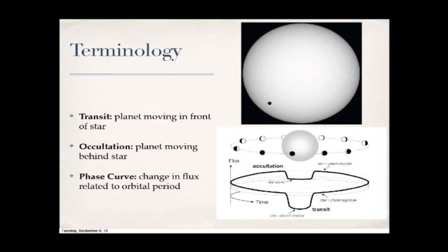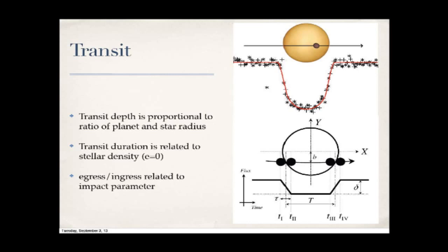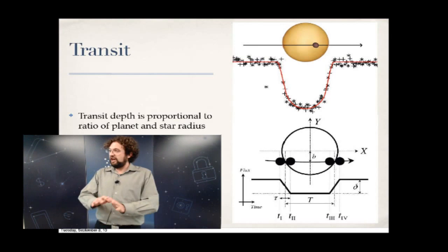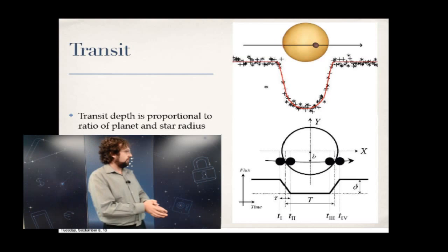Here's a typical transit. A planet moving across the star produces a characteristic reduction in light. The red model includes limb darkening — the star is not an evenly luminous source, so flux changes across its surface. The bottom part shows the simple case: a flat, evenly illuminated disk with a dark planet moving across it, producing a trapezoidal shape.